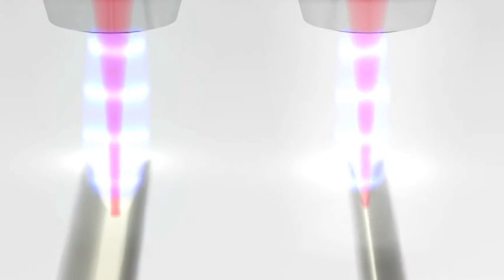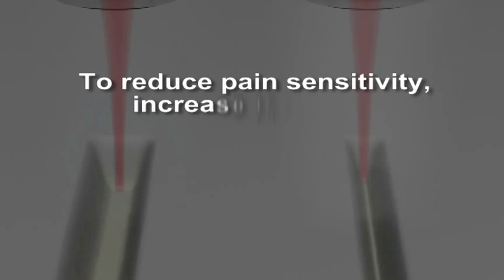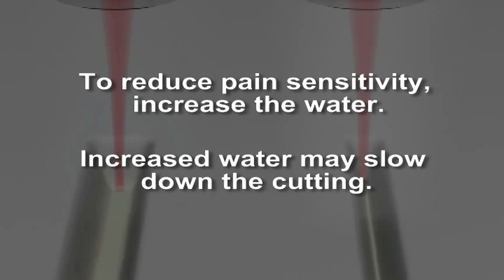A good ratio is one part water to two parts air. Simply watch your results and adjust as needed. To reduce pain sensitivity, increase the water. Increased water may slow down the cutting.